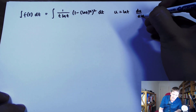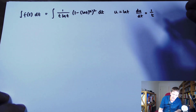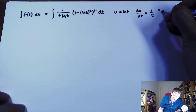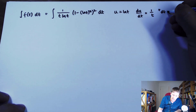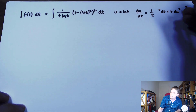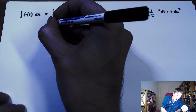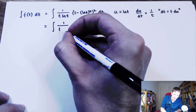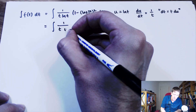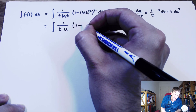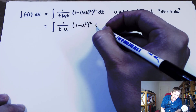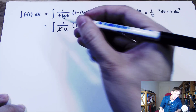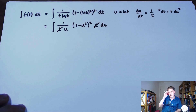So du/dt = 1/t, and in the substitution notation dt = t·du. The integral becomes ∫ (1/(t·u·(1 − u²)²))·t du. The t's cancel and now I have a clean integral purely in u: ∫ 1/(u·(1 − u²)²) du — actually ∫ (1 − u²)² / u du.